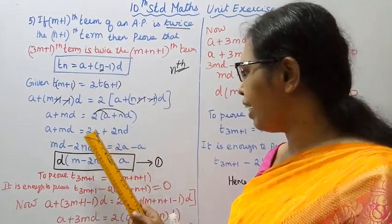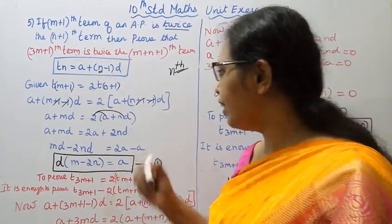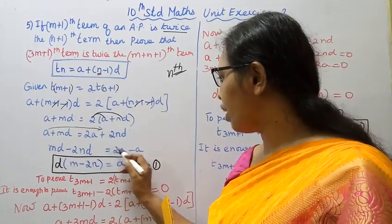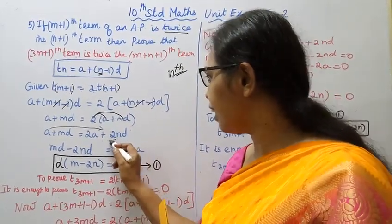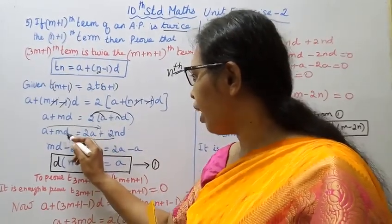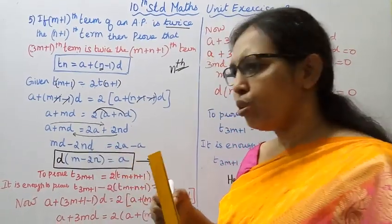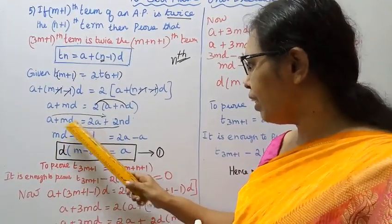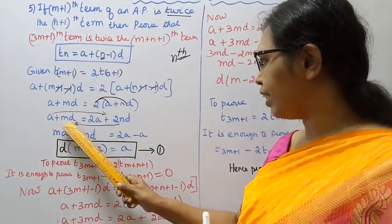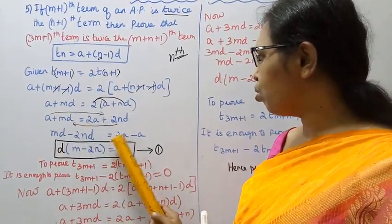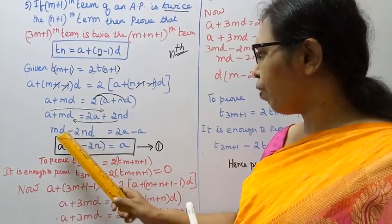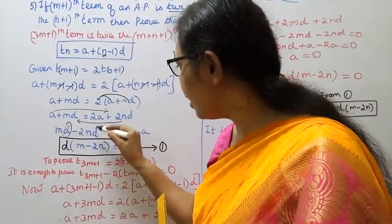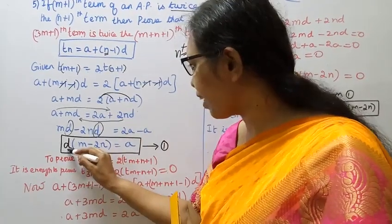Now, moving A to one side: A plus ND plus MD minus 2ND. Rearranging: A plus MD minus 2ND equals 2A minus A. Simplifying further with D terms on one side.